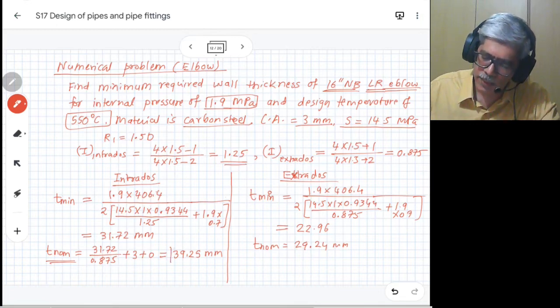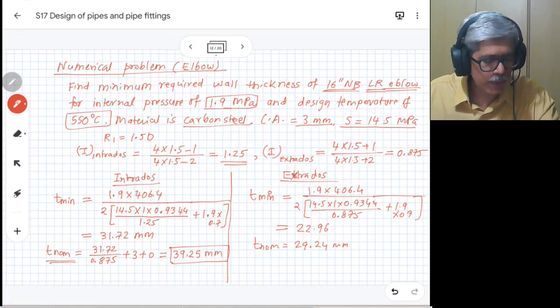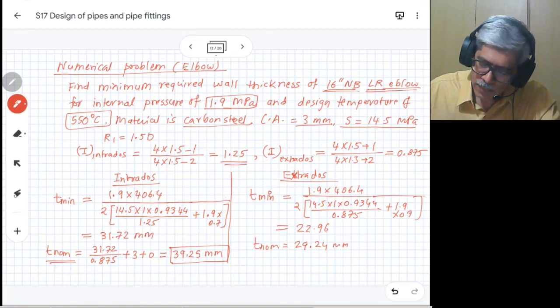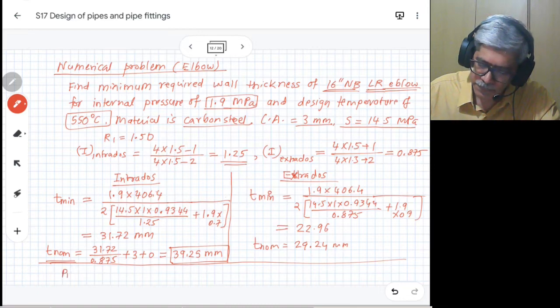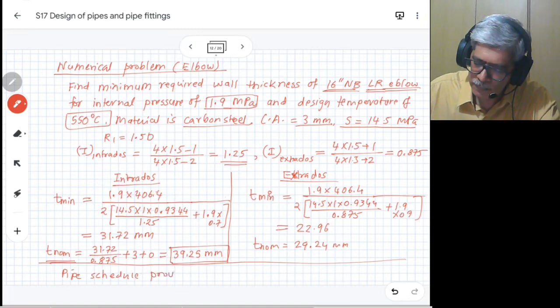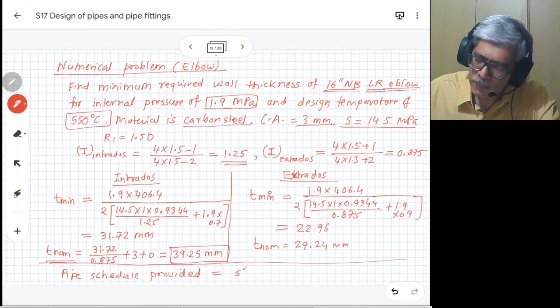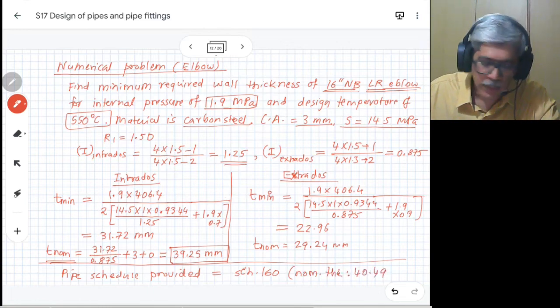Obviously, the one which is governing is at the intrados, so we need to provide pipe schedule for this particular elbow. The pipe schedule which is provided equals schedule 160, which has a nominal thickness of 40.49.